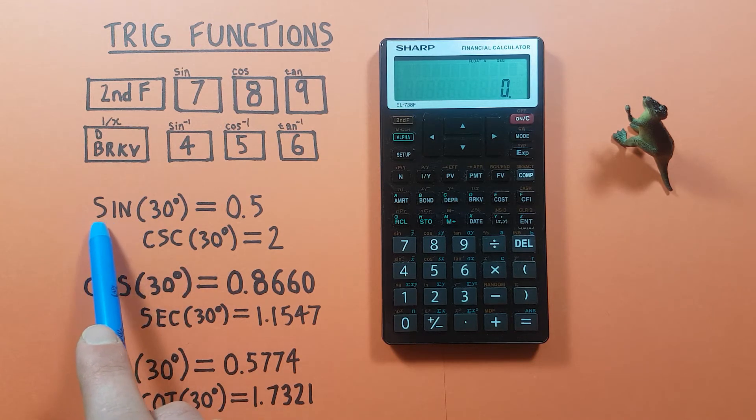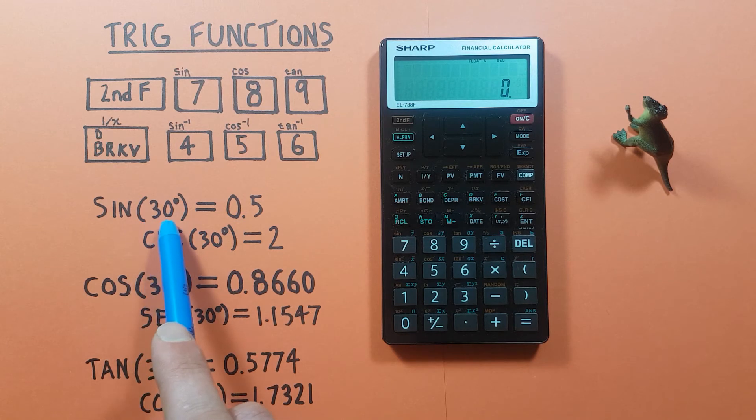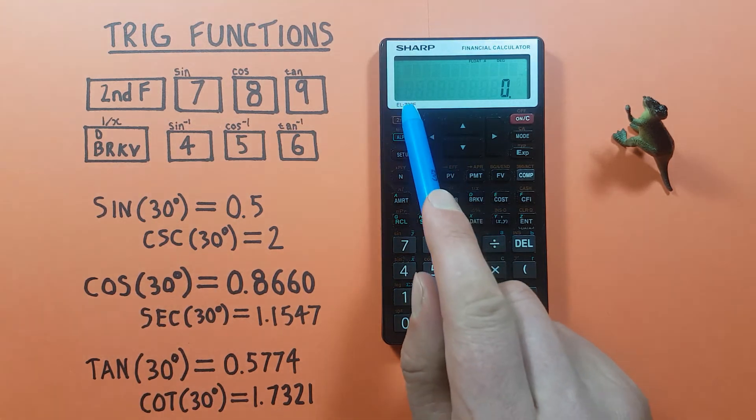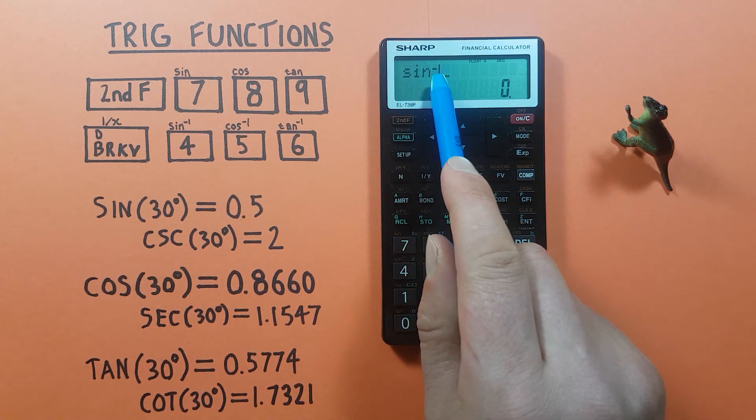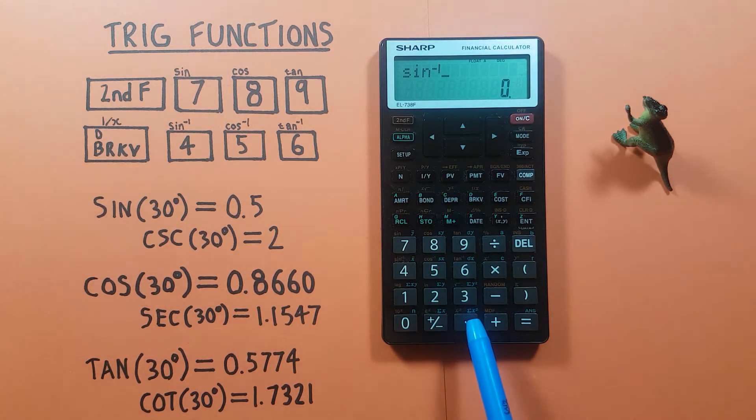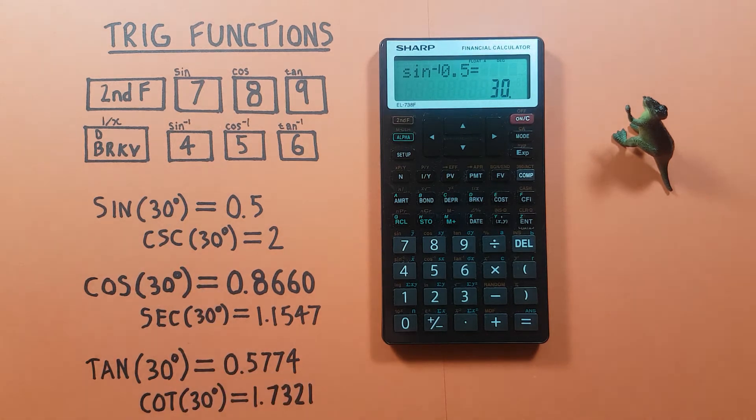So for example, if we wanted to do arc sine of 0.5, it should give us 30 degrees. Let's take a look. So we go second, four, that's our arc sine. We see the sine to the power of negative 1, enter the 0.5 and press equals, and we see we get 30 degrees. Yep, that's correct.